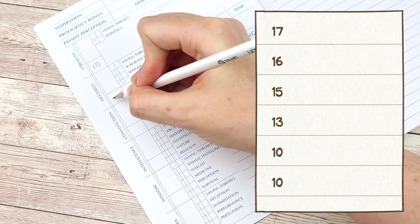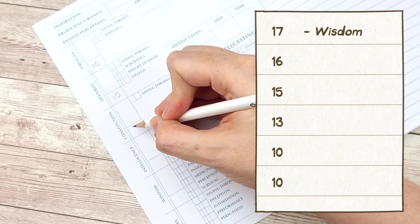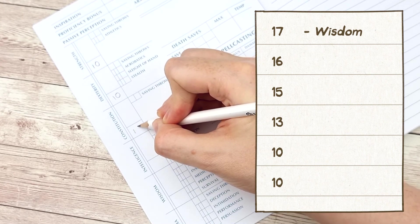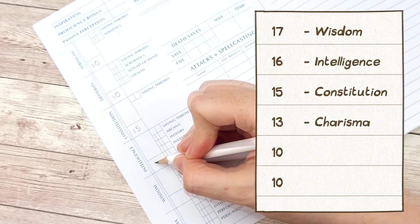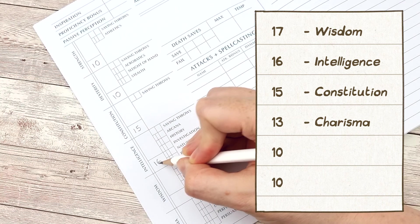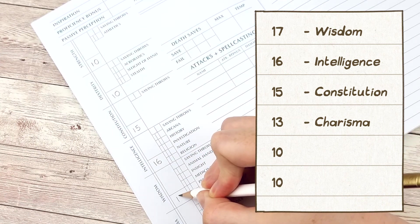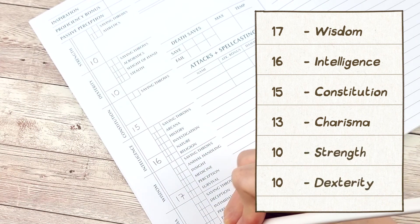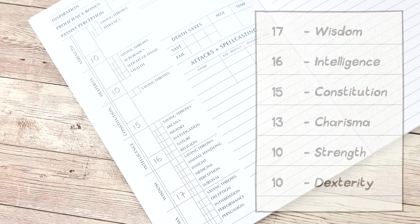I'm going to be putting the highest score in wisdom as that is the ability that my class uses to cast spells. Otherwise I'm going to prioritize putting the best rolls into charisma, intelligence and constitution. This is because I want my character to be good at talking, investigating and surviving attacks respectively.